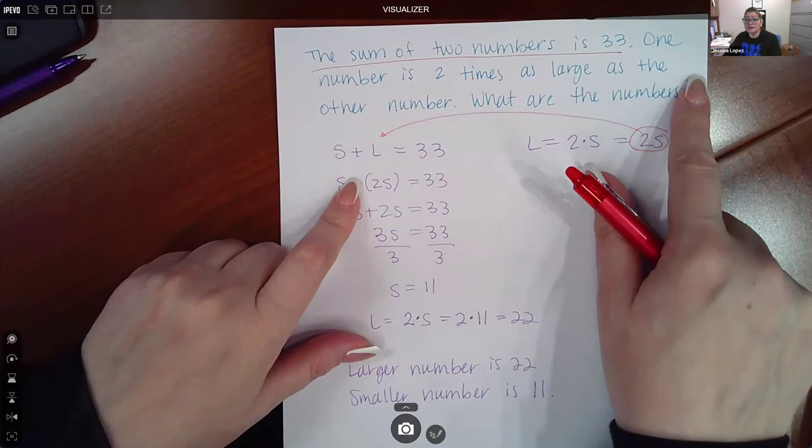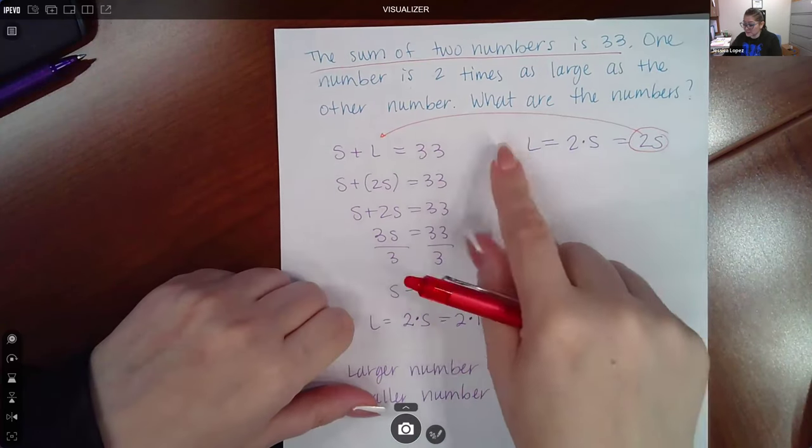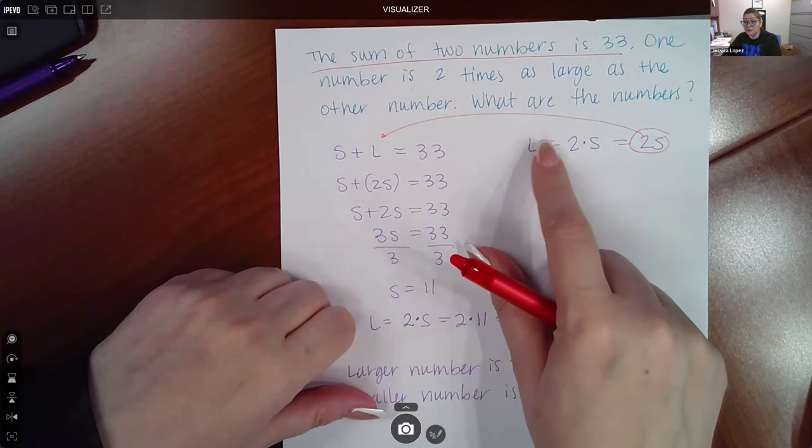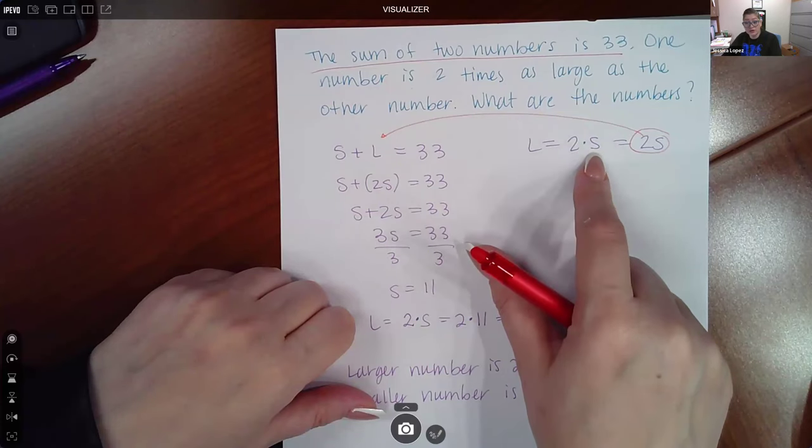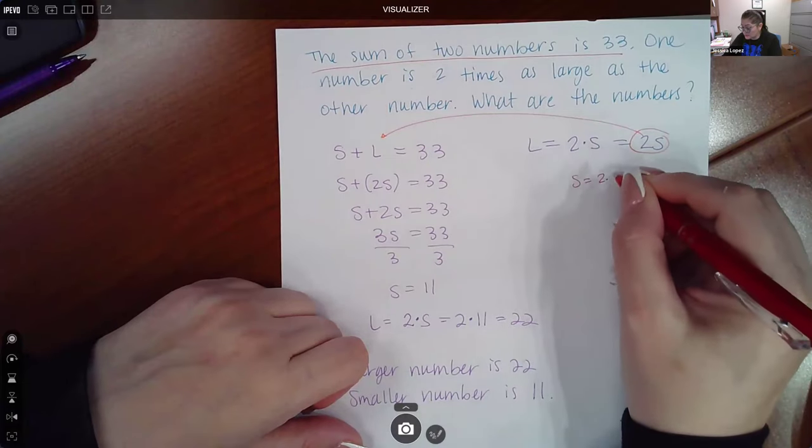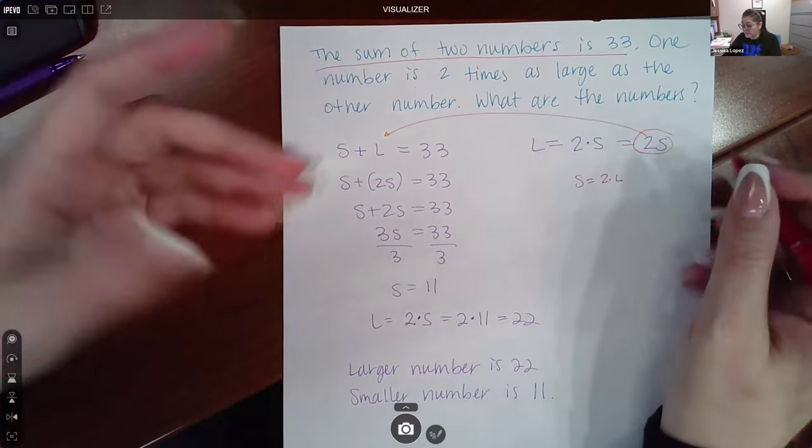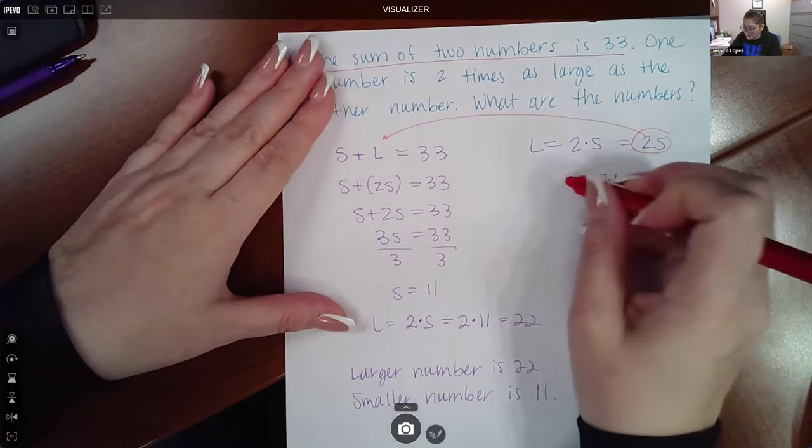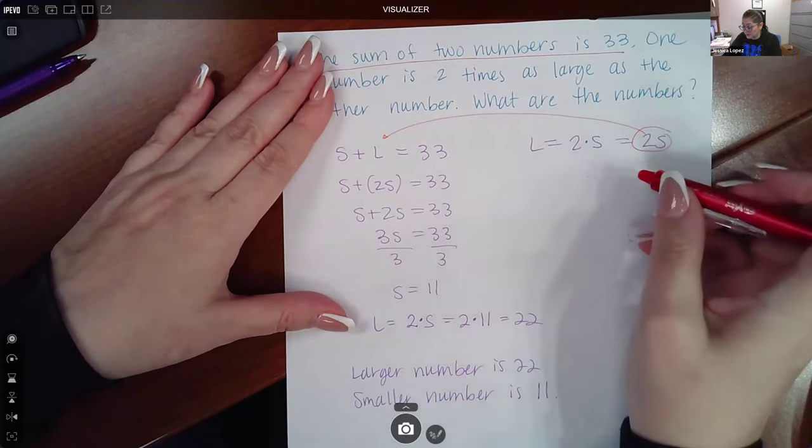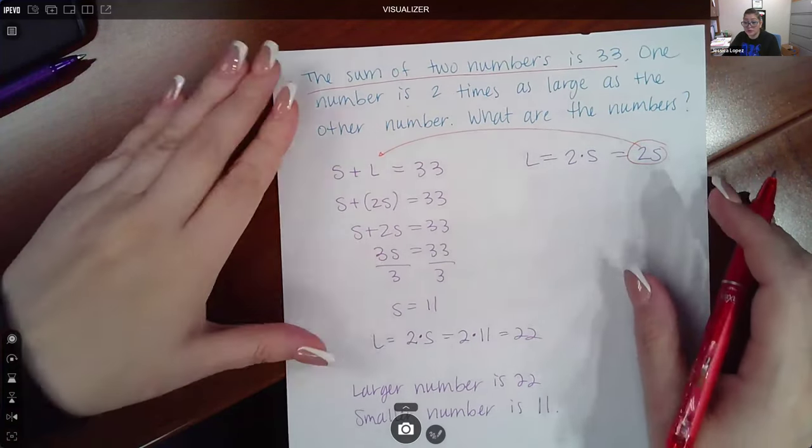This one says one number is twice as large as the other number. If you're talking about one number being twice as large, then that probably means you're talking about the bigger one. So I put the L here. The larger number is two times the other number, which is the smaller number. It wouldn't make sense to do S equal two times L because if this number is bigger, when I double it, that means that the smaller number is bigger, and that contradicts the verbiage of smaller number. So you want to make sure you're putting the correct variable in the correct spot. Sometimes it takes a little bit of logic to decide which letter is supposed to go where.